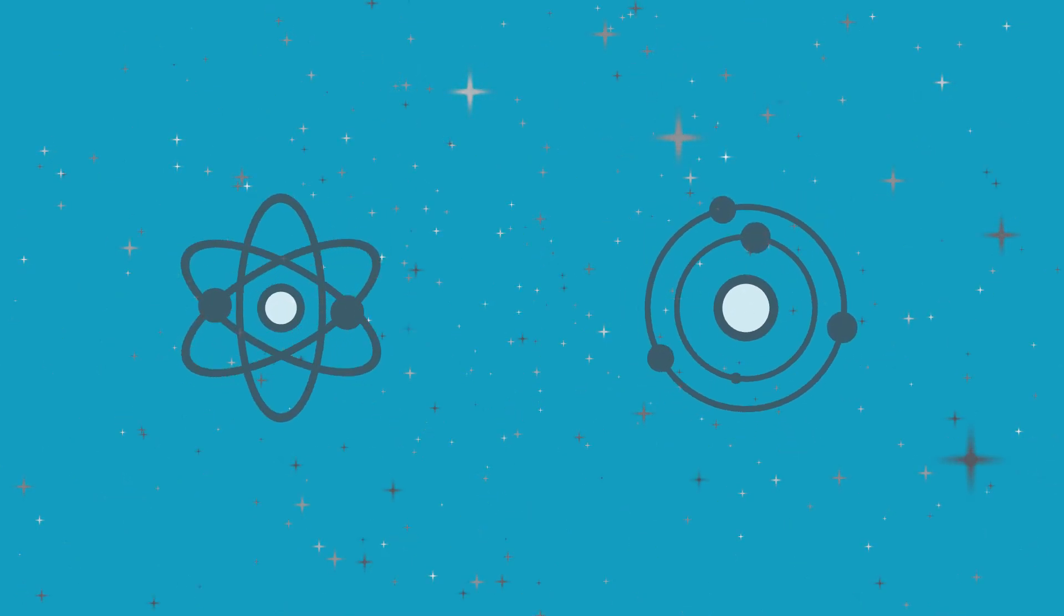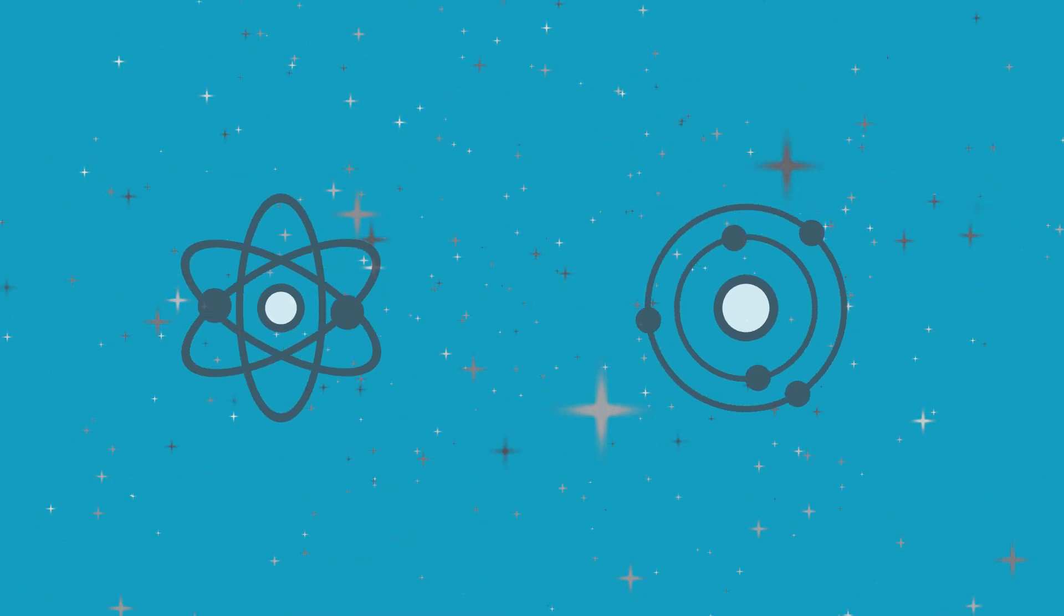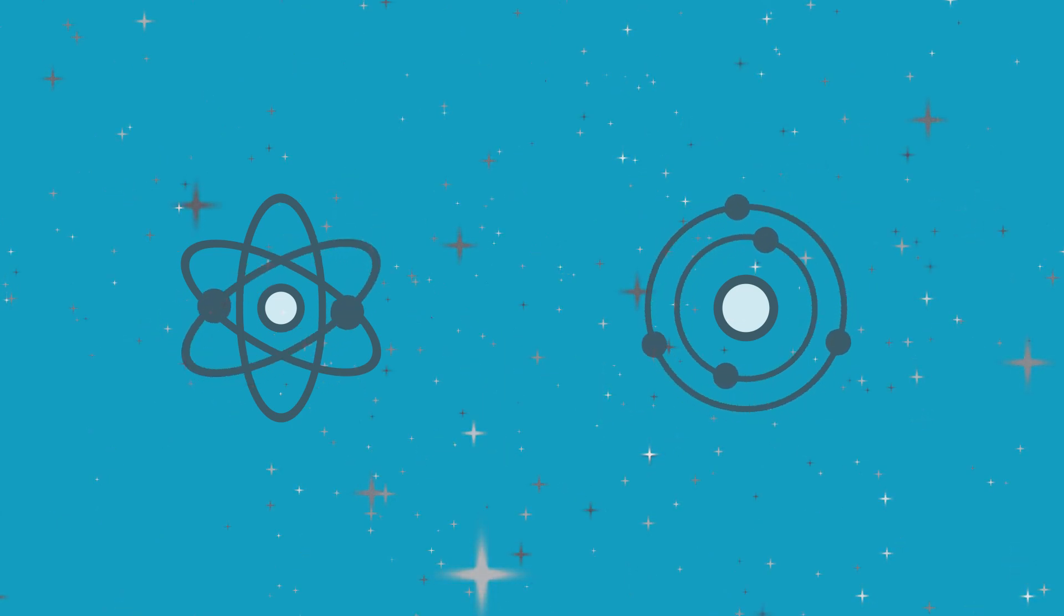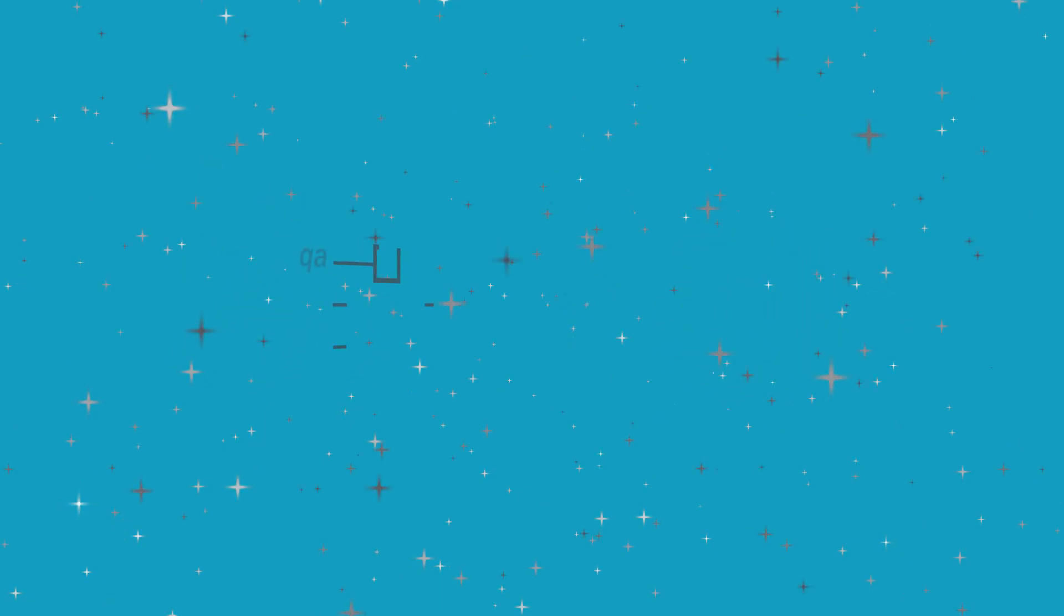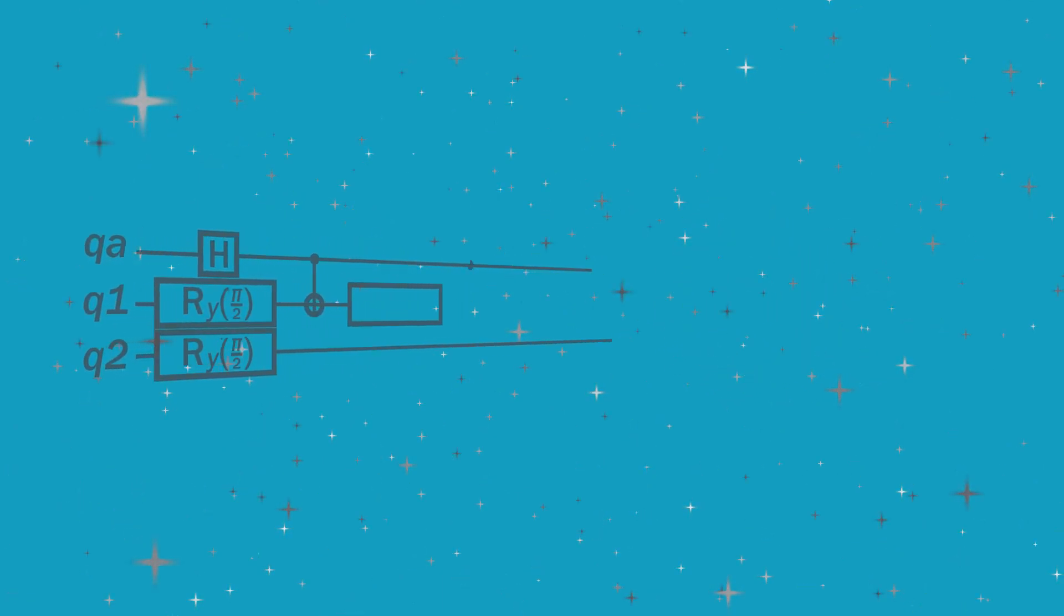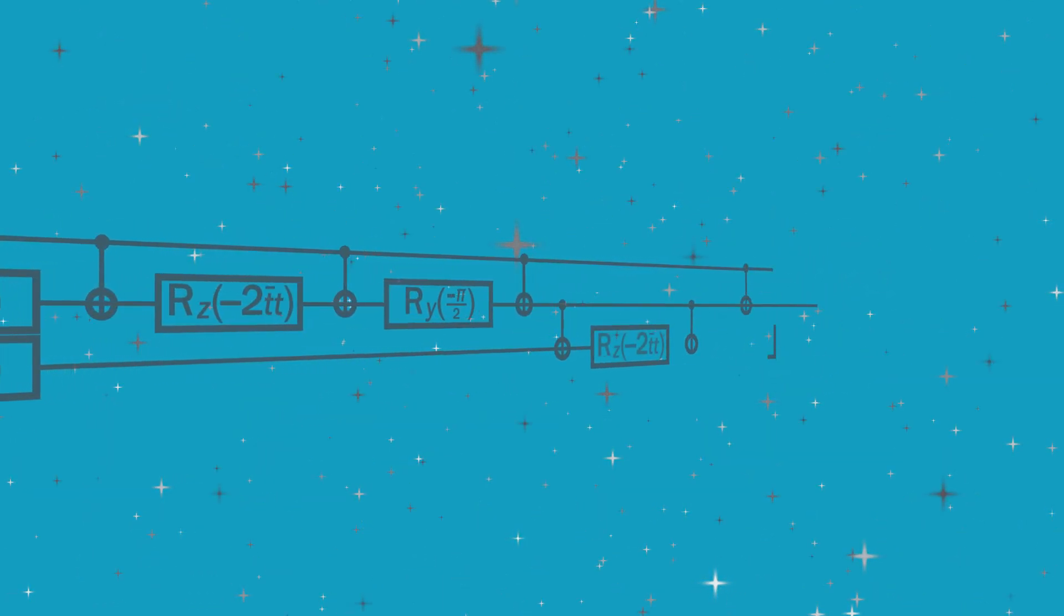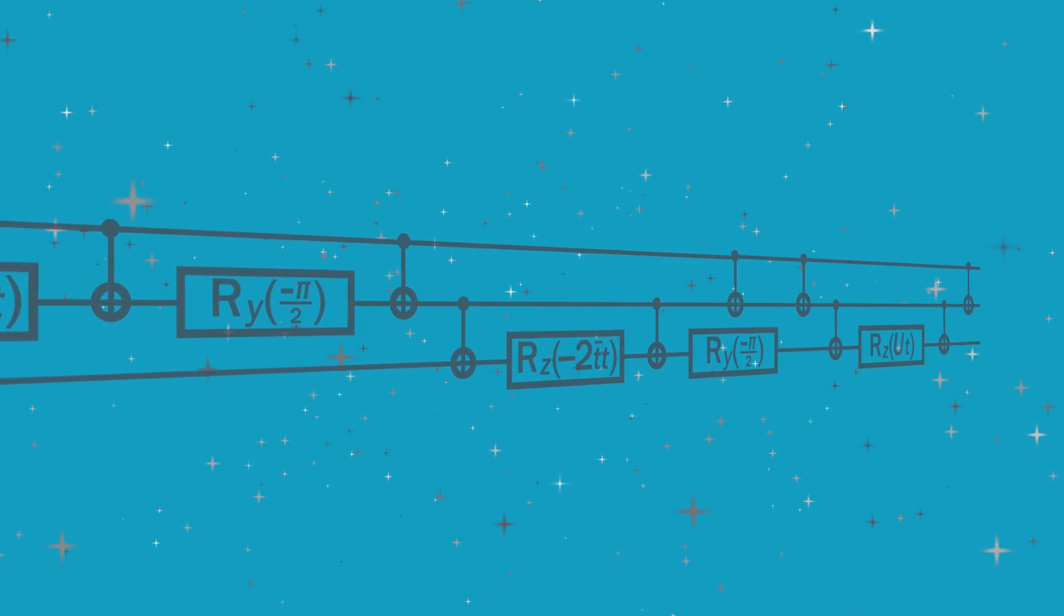We know that the universe is made up of things like atoms and electrons and protons, things that behave quantum mechanically. And over the last 20 years, we've gotten very good at controlling their states, the actual quantum states. And as we start to control these quantum states, we can start to use them to do things for computing, for sensing.